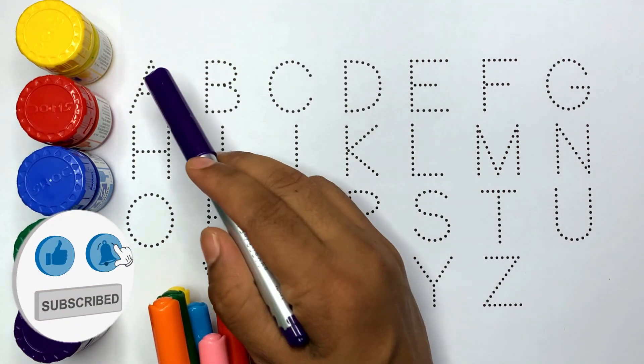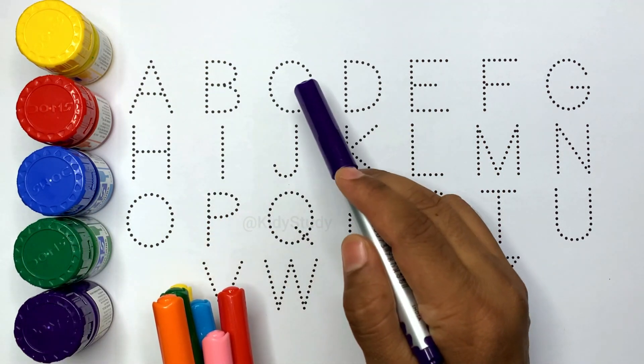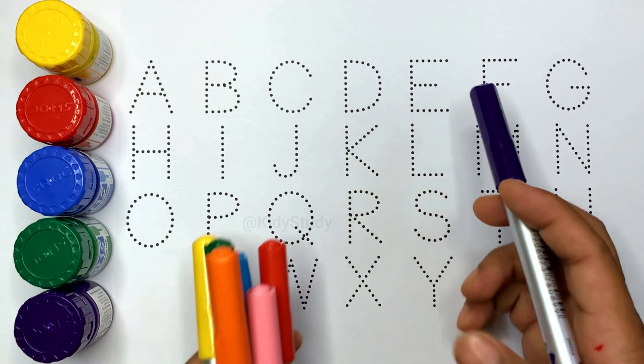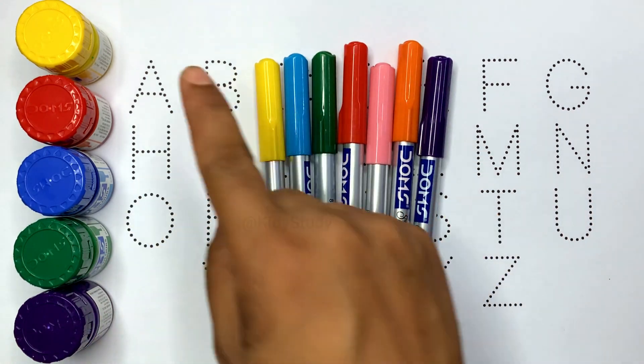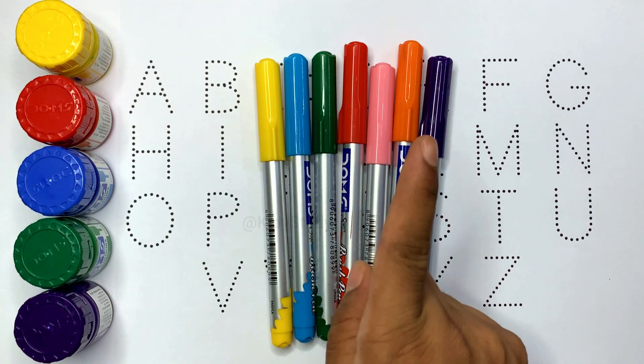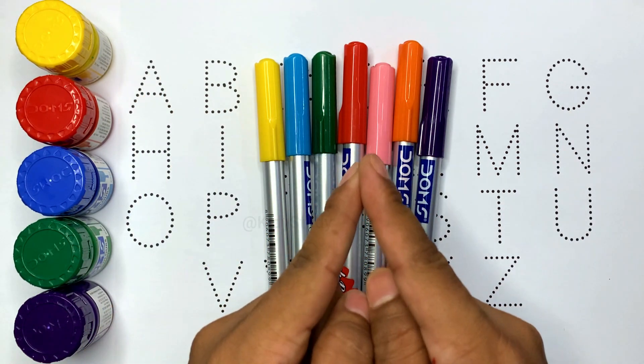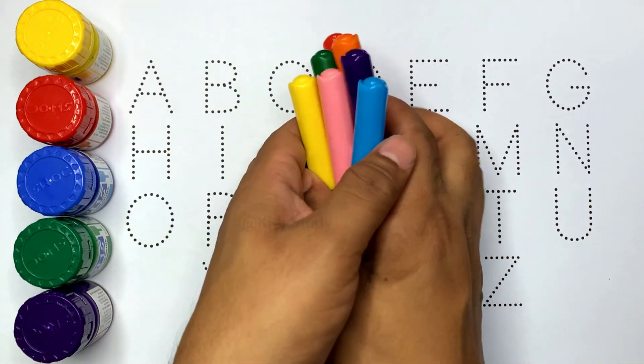A to Z. A for apple, B for ball, C for cat, D for dog. And we have already learned colors. With these colored pens we will write A to Z. Watch the complete video kids, okay? Let's start.